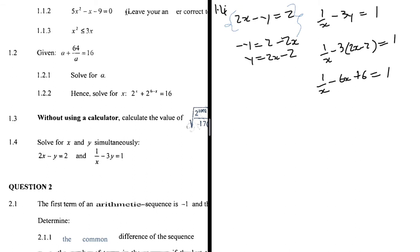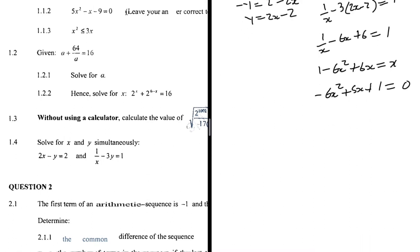Multiplying everything by x to eliminate the fraction: 1 - 6x² + 6x = x, so -6x² + 5x + 1 = 0. I multiply through by -1 to get 6x² - 5x - 1 = 0, since I prefer a positive leading coefficient.